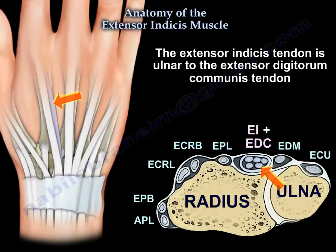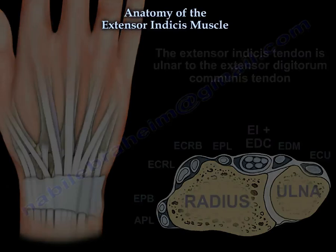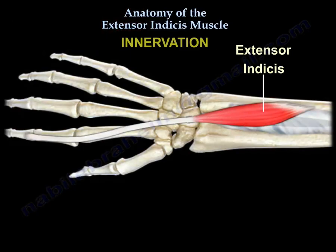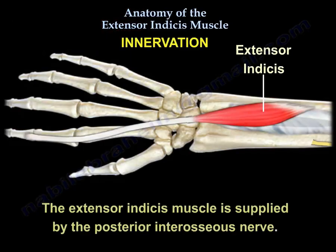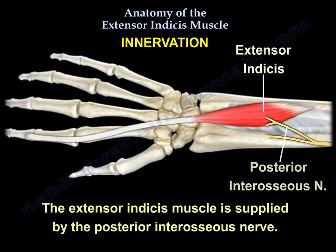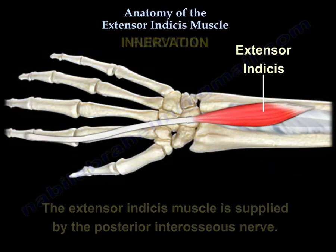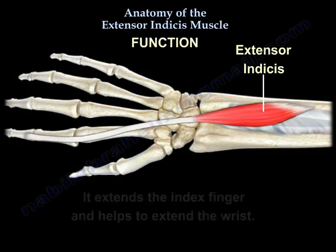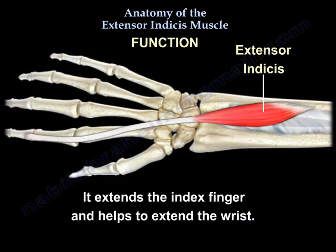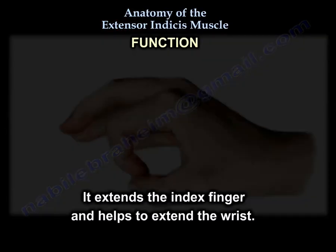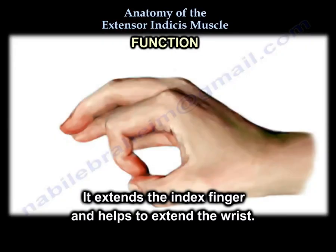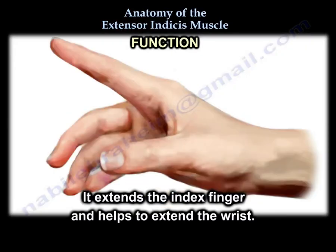The innervation of the extensor indices is by the posterior interosseous nerve, which is part of the radial nerve. Its function is to help extend the index finger and to help extend the wrist.